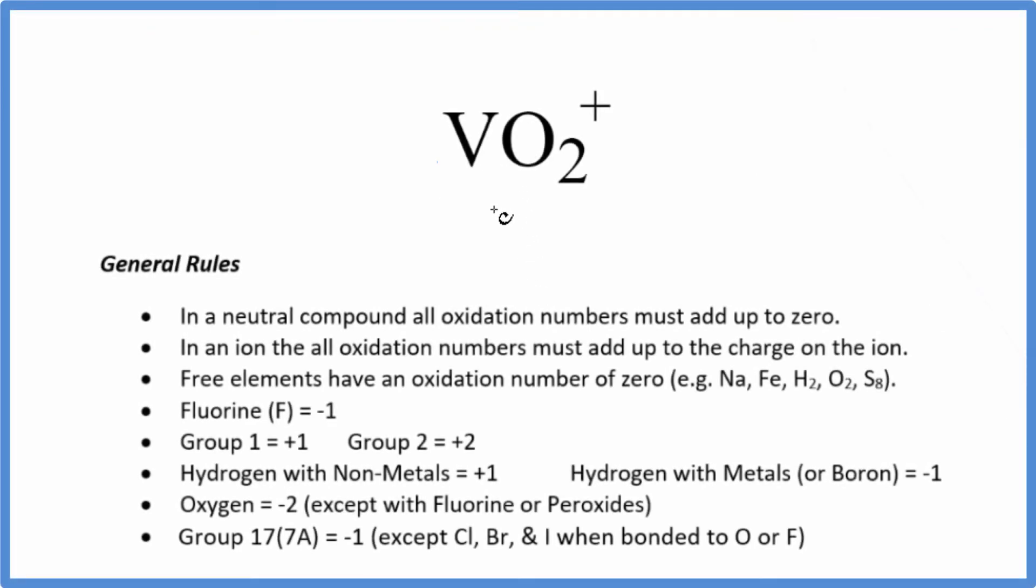In this video we'll find the oxidation number for the vanadium, the V in VO2+. This is the deoxy vanadium 5 ion. Let's find those oxidation numbers. First off, this is an ion, we have this positive charge here.